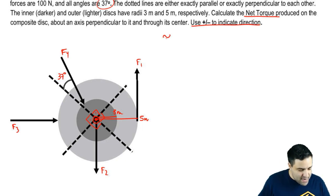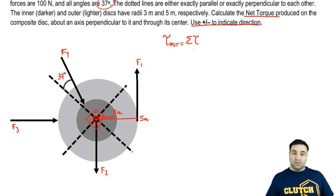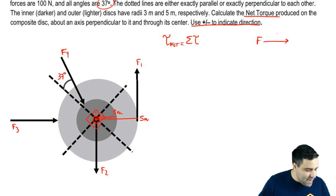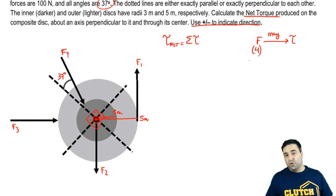So the net torque, torque net, is the same thing as the sum of all torques. There are four forces, so there's potentially four torques. Remember, a force may cause a torque. There are four forces, so you can have as many as four torques, but some forces may not cause a torque.